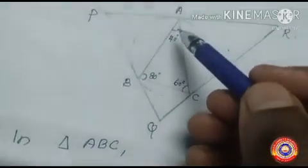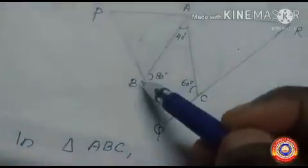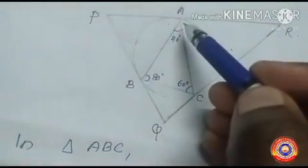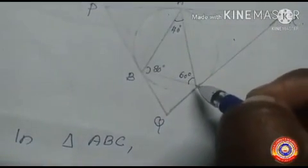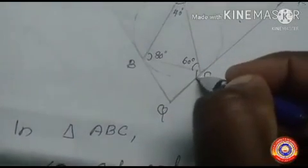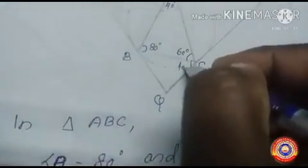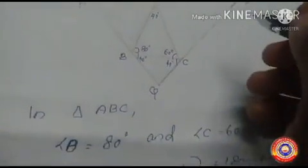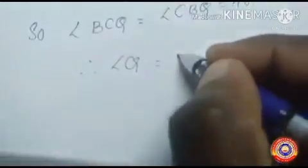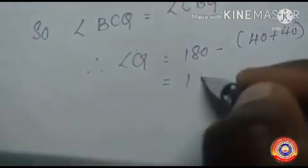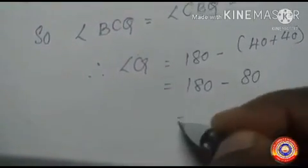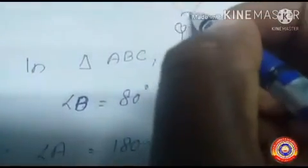Angle A equal to 40 degrees is the angle formed from chord BC, and it is half of the central angle. So the angle between the chord and the tangent equals 40 degrees, meaning angle BCQ and angle BCQ equal to 40 degrees each in triangle BQC. Therefore angle Q equals 180 minus (40 plus 40), which equals 180 minus 80, giving angle Q equal to 100 degrees.